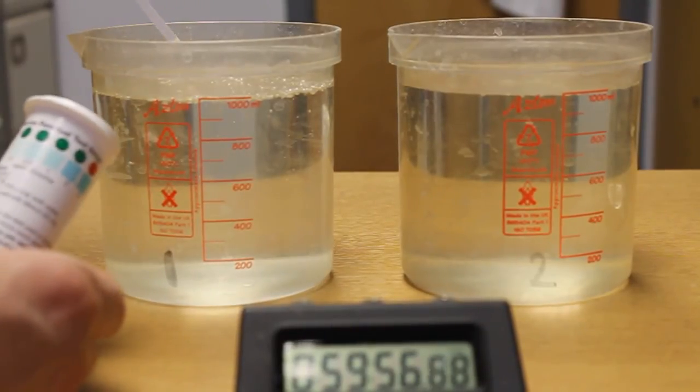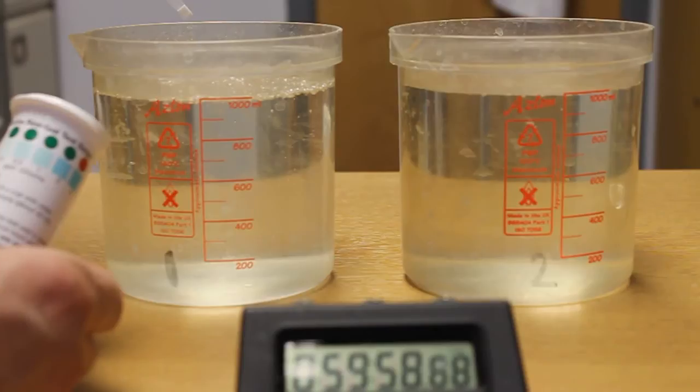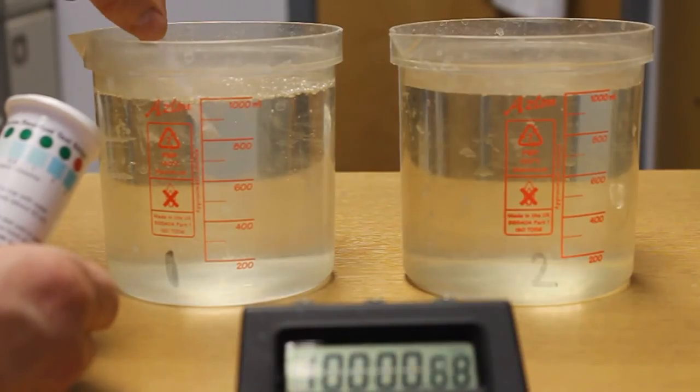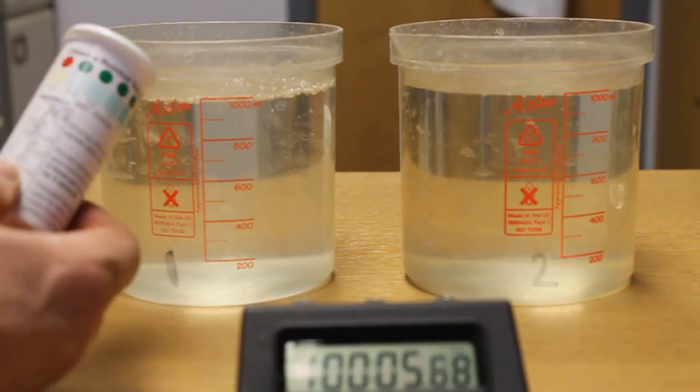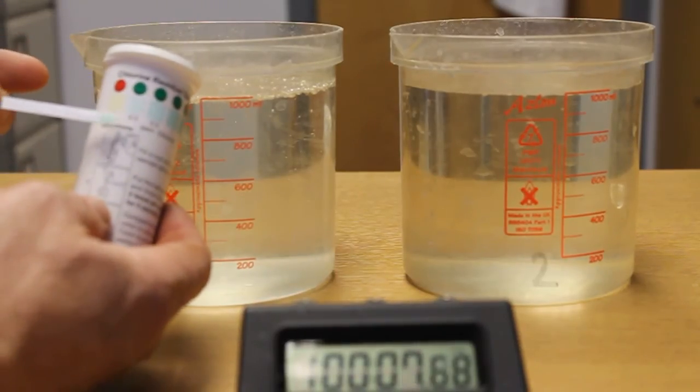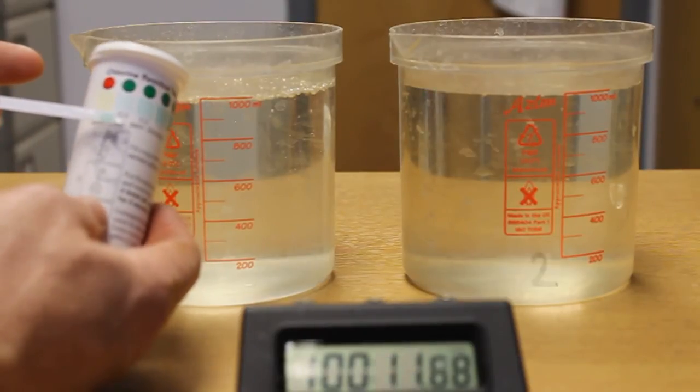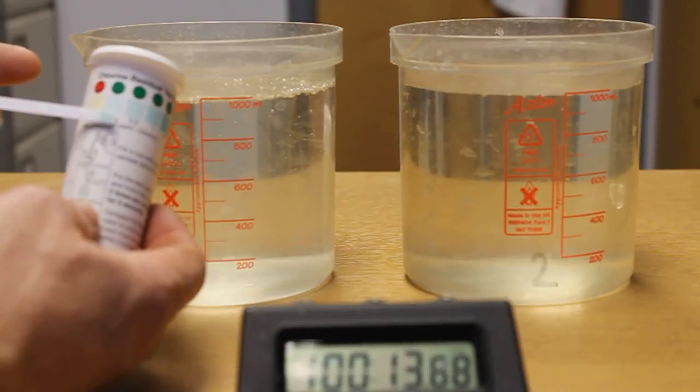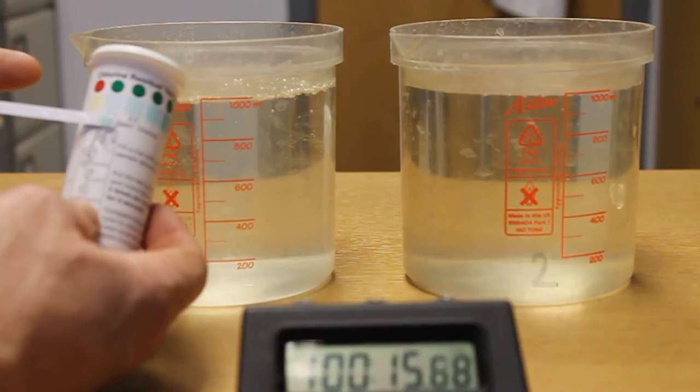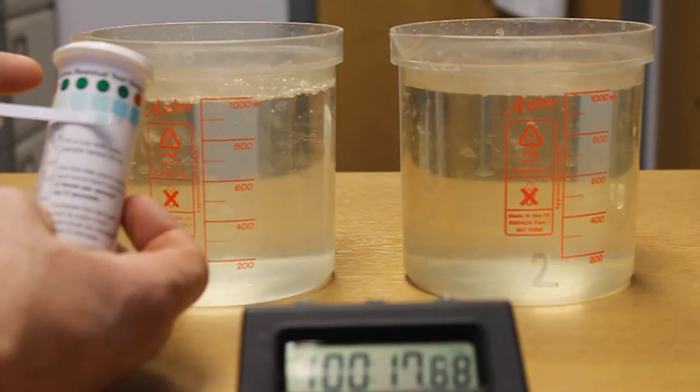Put in the strip for 5 seconds. 1 second, 2 second, 3 second, 4 second, 5 second. And now compare the colour on the guide. We can see the colour on the guide is coming in at about 0.3 chlorine on this strip.